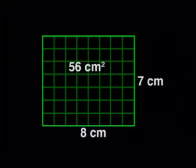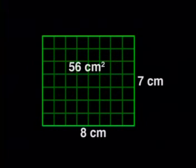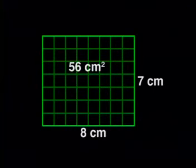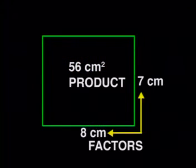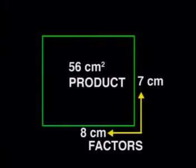If we illustrate this in a diagram, you can see that the area of a rectangle with dimensions 8 cm and 7 cm is 56 cm². The length and the breadth of the rectangle represent the factors, and the area of the rectangle represents the product. So if I said to you factorize 56, your answer would be 7 times 8. In writing 56 as a product of its factors, you have factorized it.